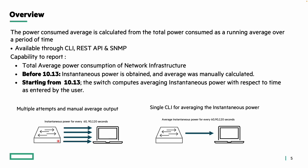The power consumed average is calculated from the total power consumed as a running average over a particular period of time. This information is accessible through CLI, REST API, and SNMP — three different ways to access it. This gives you an overall view of how much power the entire infrastructure is using on average.